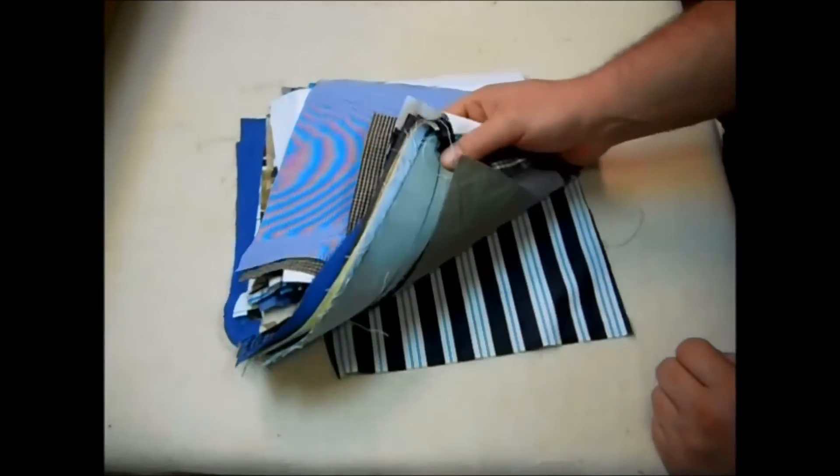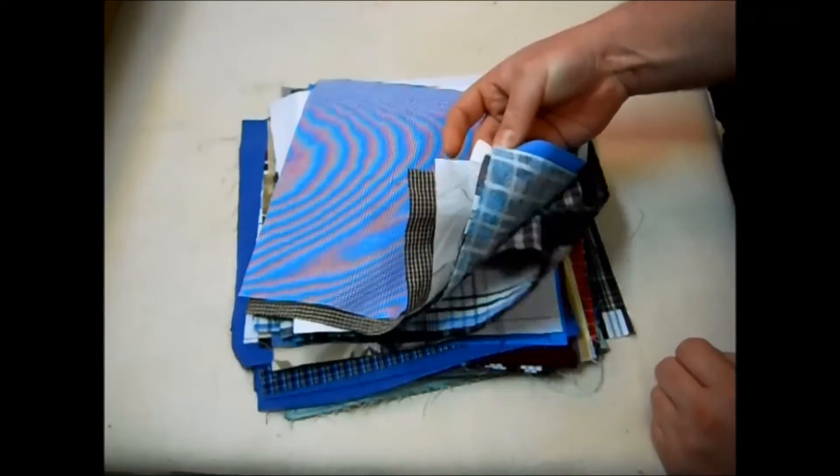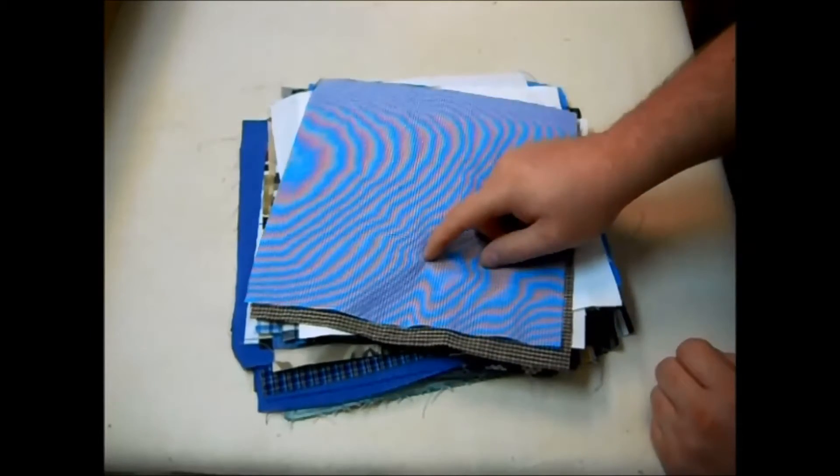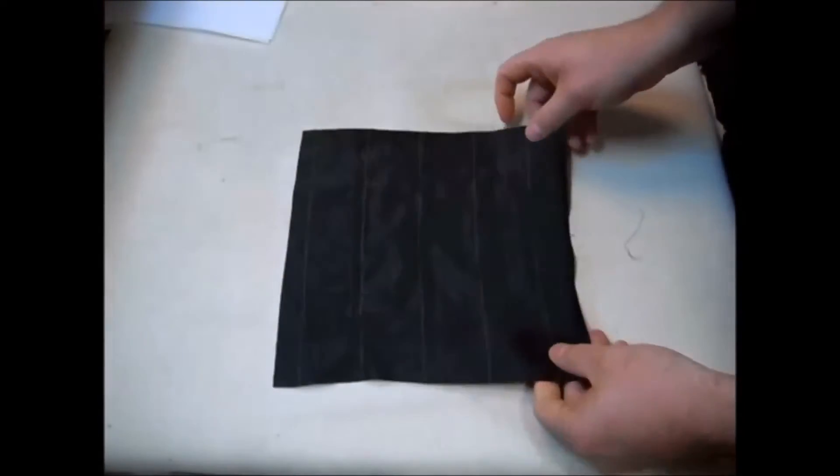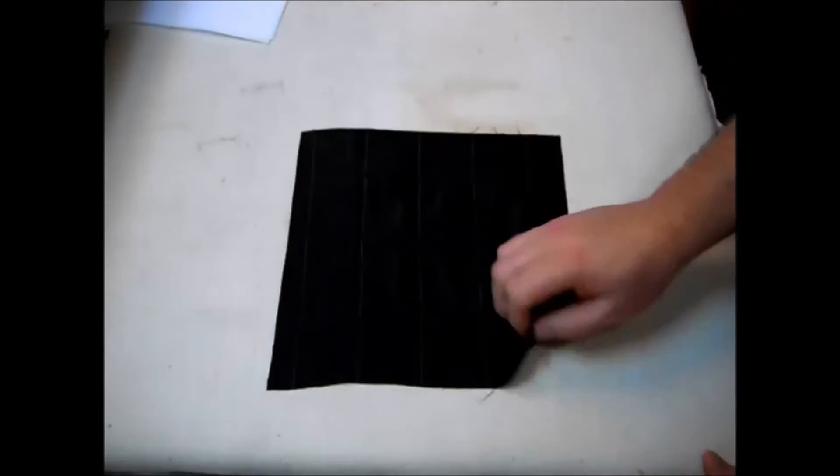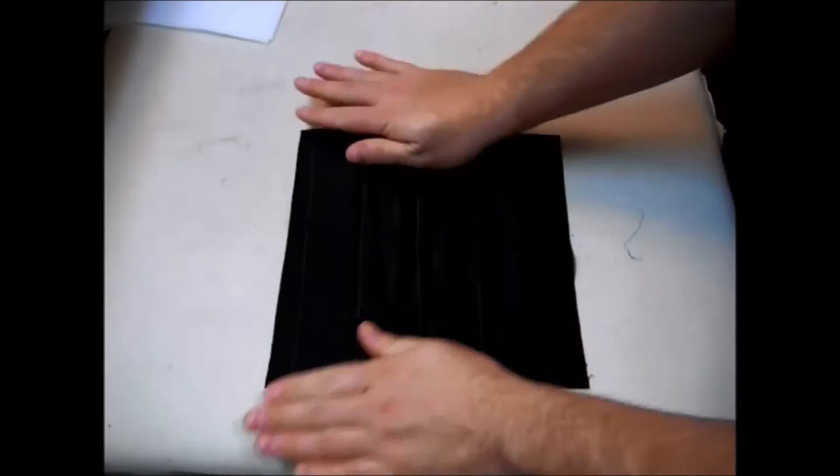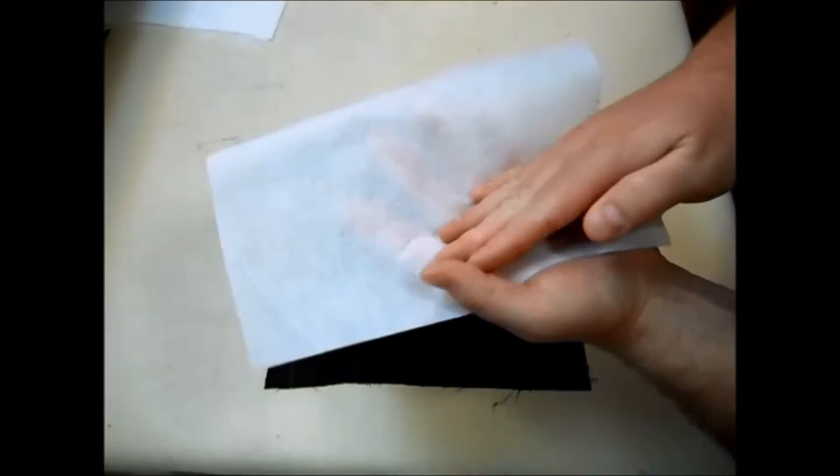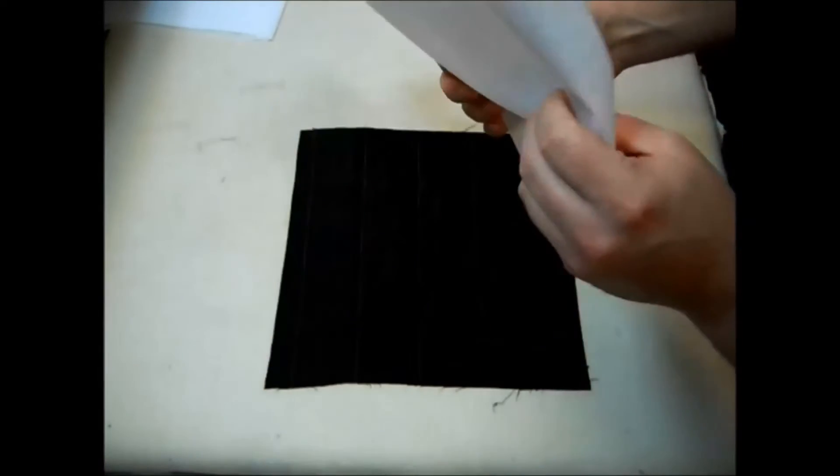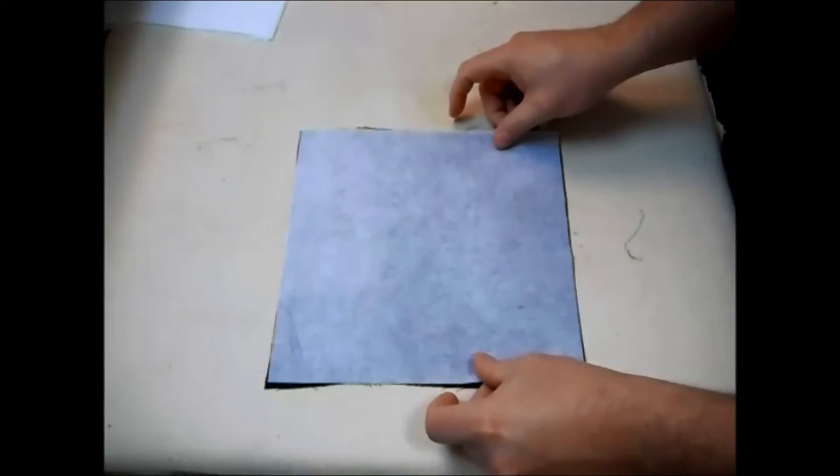I have my squares all cut out here. And I have way more than 48 here so I'll have plenty to choose from. The next thing that you're going to want to do is go ahead and cut all your pellon out to nine and a half inch squares also. And I've already done that right here. Now you just want to take your square of fabric here. You want to put it so it's pretty side facing down. You want to take a piece of your pellon here. If you've never used pellon before it has a bumpy side which is the glue and a soft side. We want to put the glue side down.